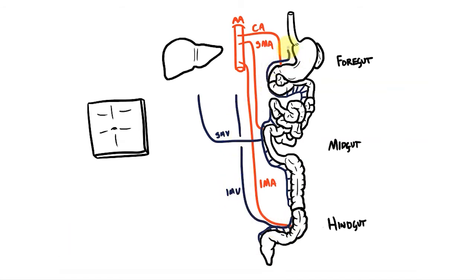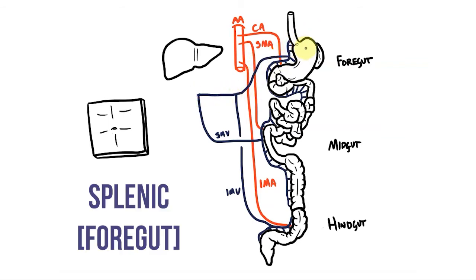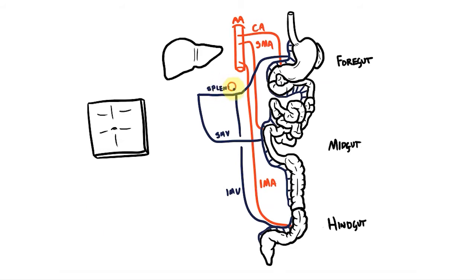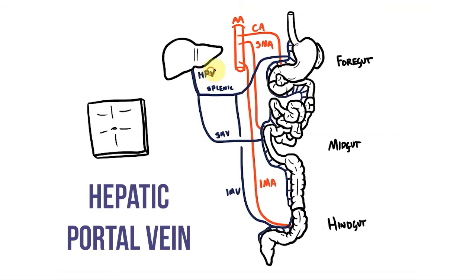However, the foregut is an odd exception. This portion of the gut tube is drained by the large splenic vein. The splenic vein heads across to the right hand side of the abdomen. As it does so, the inferior mesenteric comes up to join it. The splenic vein then unites with the superior mesenteric and forms a large vein known as the hepatic portal vein.